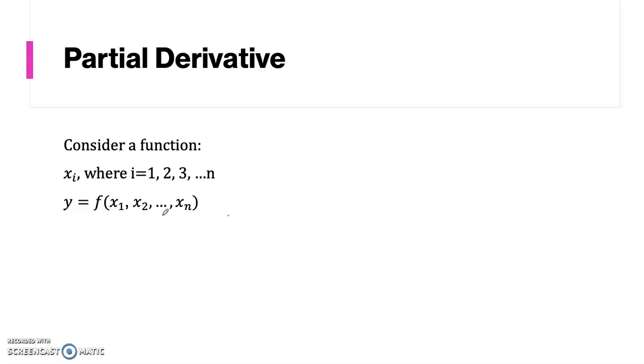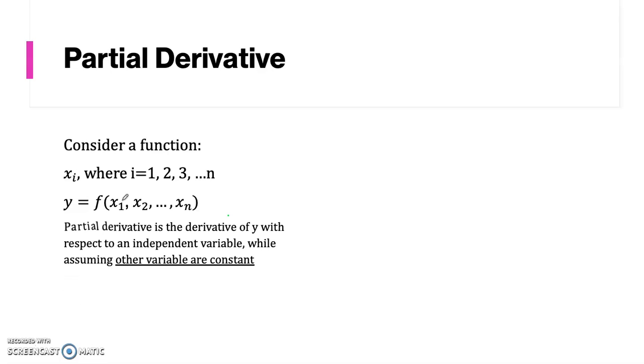Here, the variables xi are all independent of one another, so each can vary itself without affecting each other. So partial derivative is the derivative of y with respect to an independent variable, while all other variables are assumed constant.